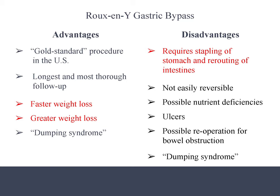Disadvantages of the gastric bypass include that it requires stapling of the stomach and rerouting of the intestine, and it's not easily reversible. There are vitamin and nutrient deficiencies such as iron and B12. We can see ulcers or bleeding after surgery, and there's a possible need for re-operation due to adhesions or bowel obstruction. Dumping syndrome also limits your ability to eat sweets even in small amounts.